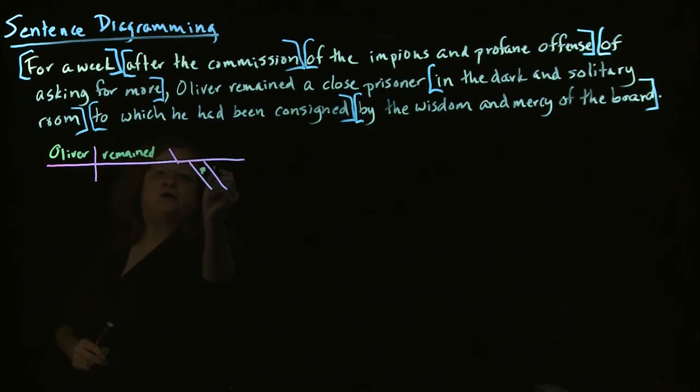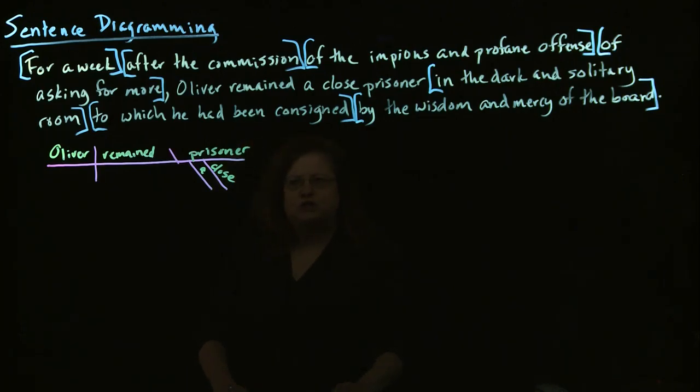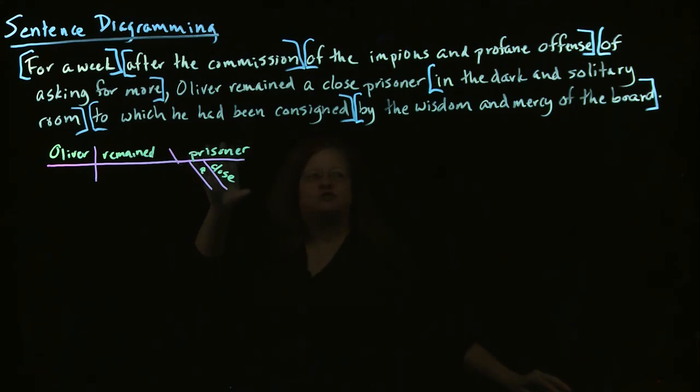The first thing we want to do is say: we've gotten rid of a whole bunch of prepositional phrases, dependent clauses, and a couple of verbals. What's remaining that's not in the brackets? That's going to be the core of our sentence: "Oliver remained a close prisoner." That's the core of our sentence. So we do our basic framework — Oliver remained a close prisoner. Now we want to take this structure and look at it to see where the rest of this sentence will connect.